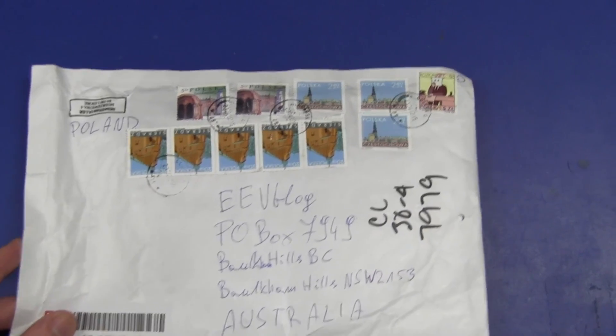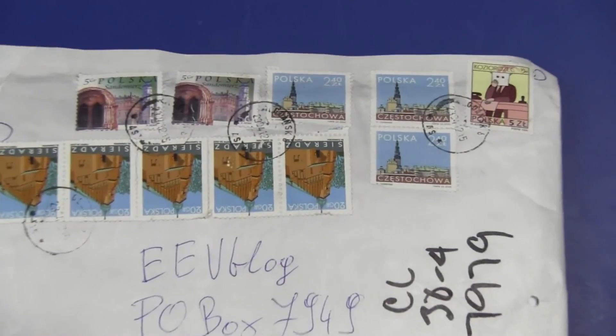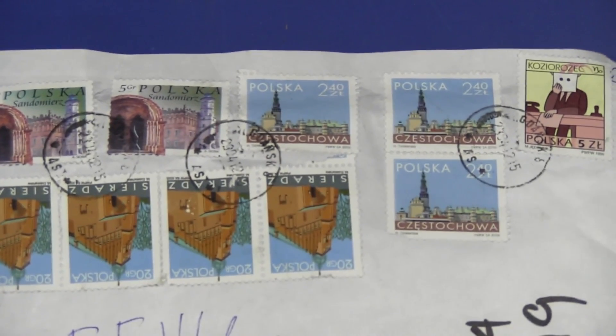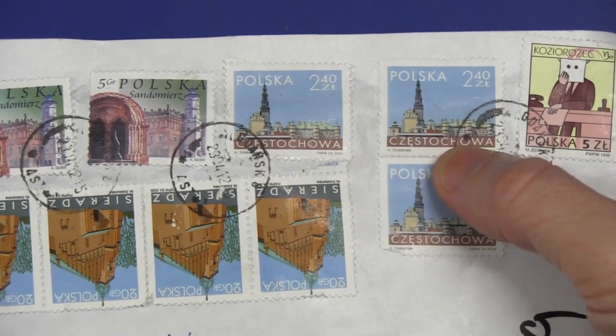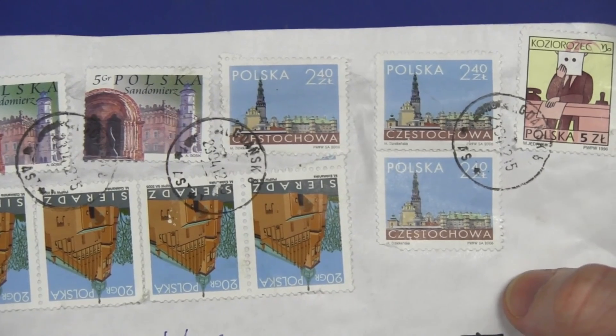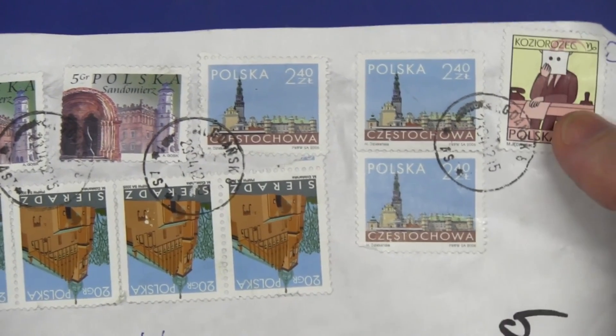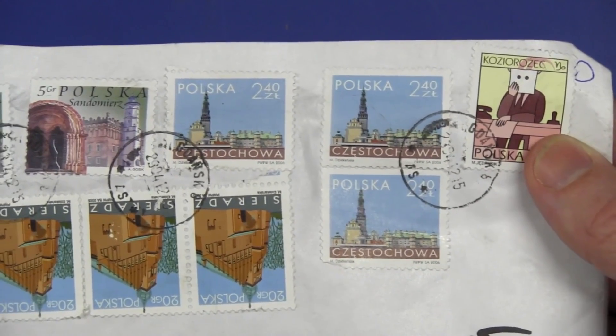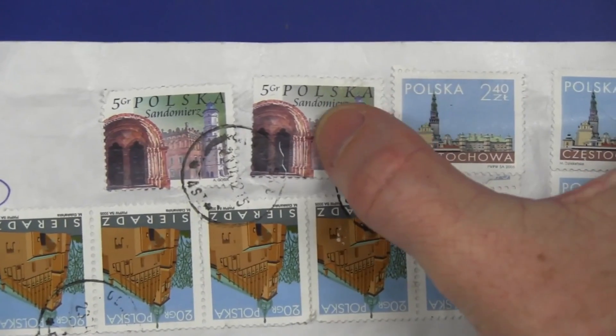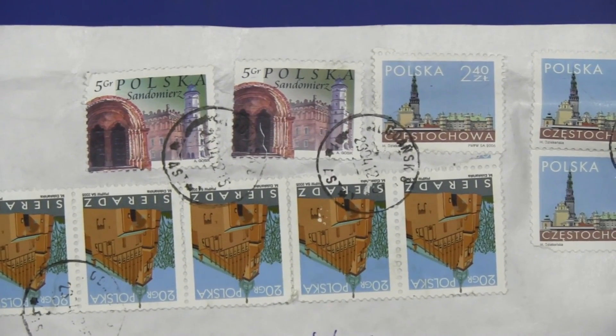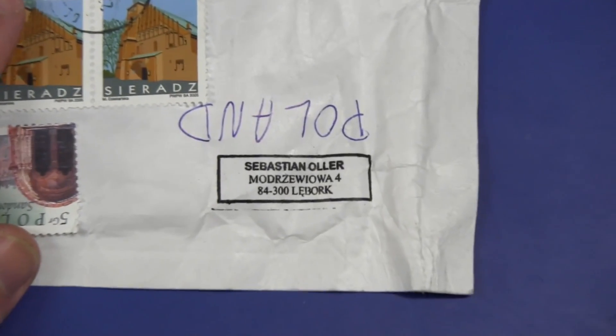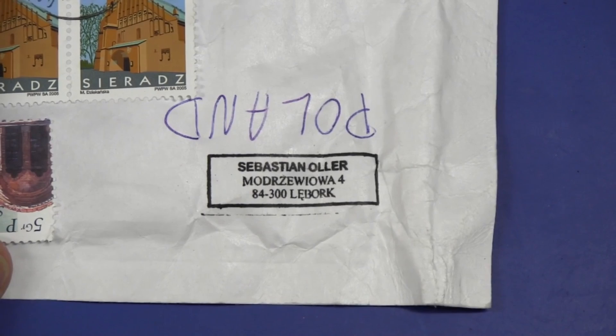Next up here we have one from Poland. And let's have a look at some of the stamps. I do enjoy looking at stamps. So that's, I don't know, I'm not even going to pronounce that. Maybe it's one of their cities and that's the skyline perhaps. Not sure who or what that is. Bizarre. And some obviously famous building or something in Poland. There you go. Awesome. And it's from, tada, I think we have something here. Here we go. Sebastian Ola. Thank you very much Sebastian. So here we go.